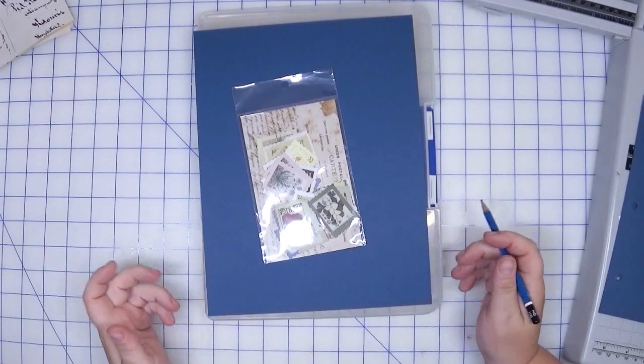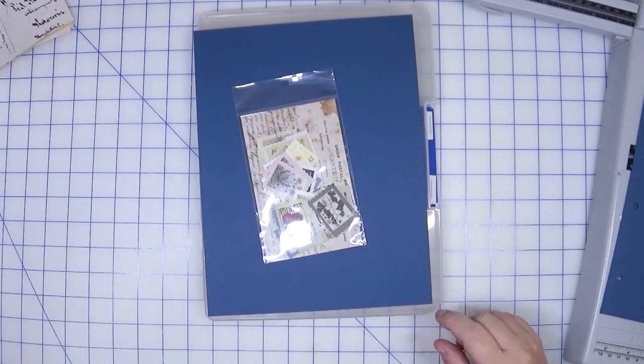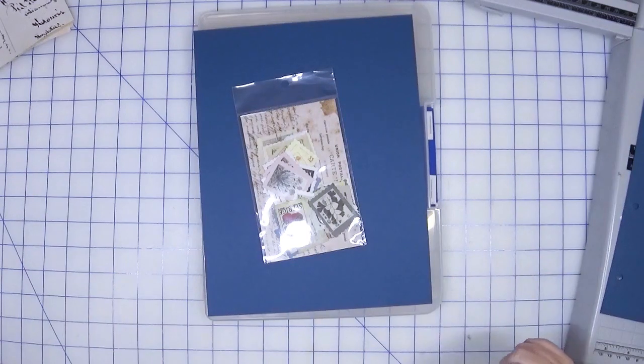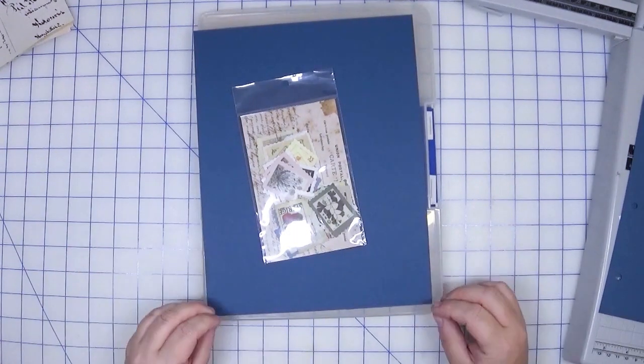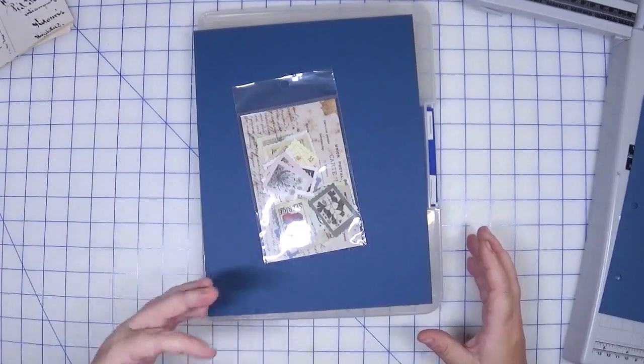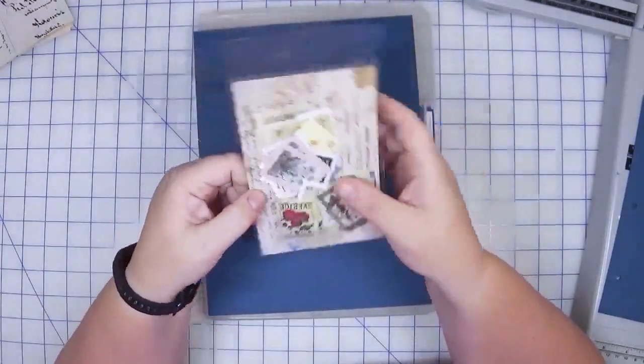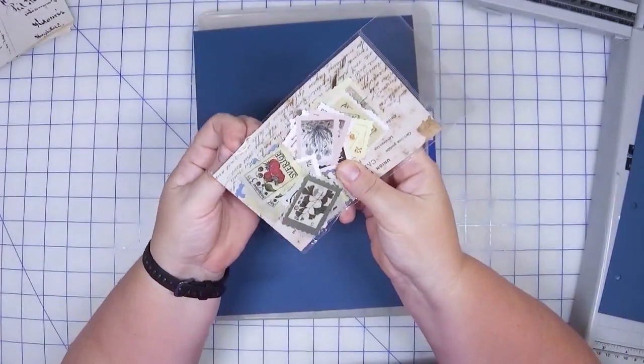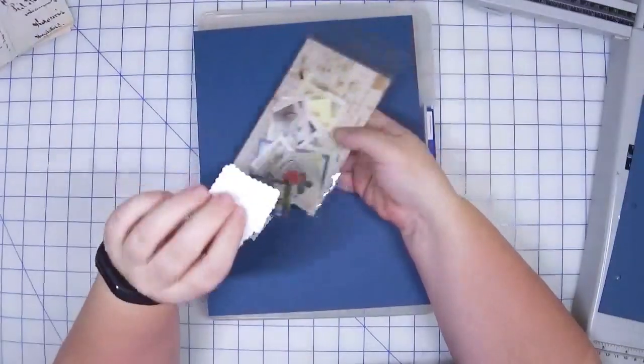Hi guys, welcome back to Creatively Crafted Life, this is Melanie and I have a little organization video for you today. I know it's been a while. Basically we're going to make something to organize small embellishments. In my case, I have these faux stamps I purchased off Amazon.